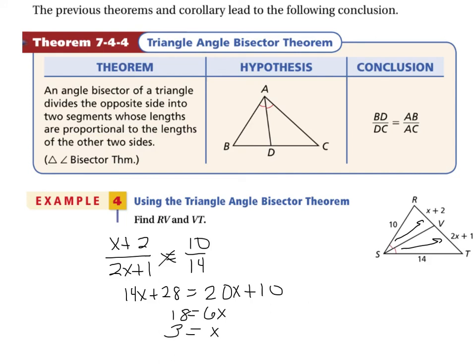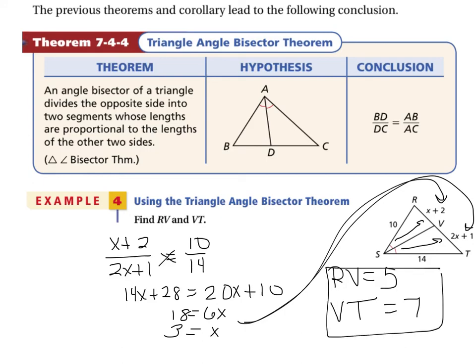Plug it in. That would give me the length of RV as 3 plus 2, which is 5, and the length of VT, which is 2 times 3, 6 plus 1, is 7. The two lengths are 5 and 7.